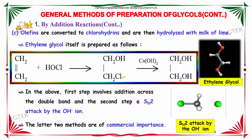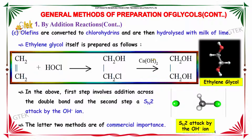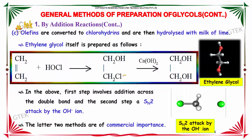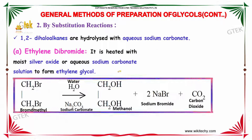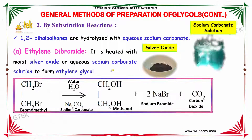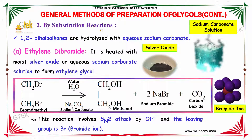The latter two methods are of commercial importance. SN2 is the replacement of one ion by another. The second major category is preparation by substitution reactions.